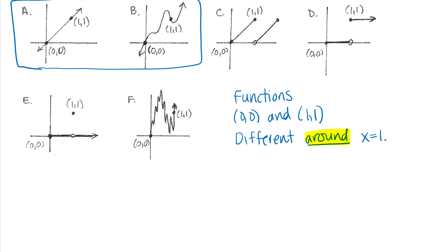C, D, and E however come up in many applications that have to do with functions switching between an off and on state. You would have something that is off until a particular time and then turns on, or in the case of C, something that starts out off and ramps up to a particular value and then switches back down and comes up again, like something that cycles over and over again. Graph F looks a little bit like something you might see on a stock market graph, where data is kind of all over the place and a little more jagged.